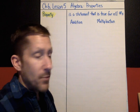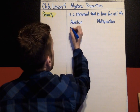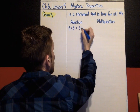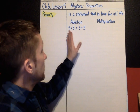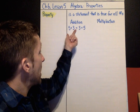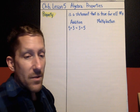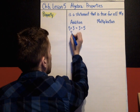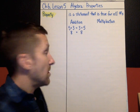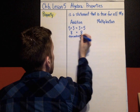The first property we're going to look at on the addition side — an example is: 5 plus 3 is the same thing as 3 plus 5. This is an example of the commutative property. The commutative property tells you that if you're adding two things, the order does not matter. You can switch the order; it doesn't matter. These are also known as equivalent expressions.